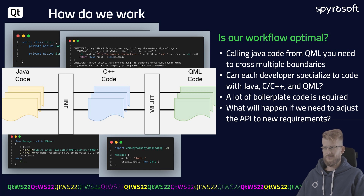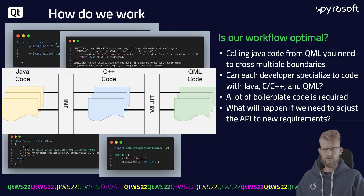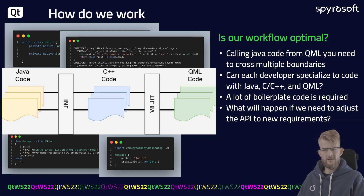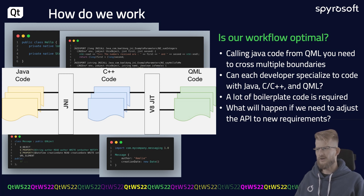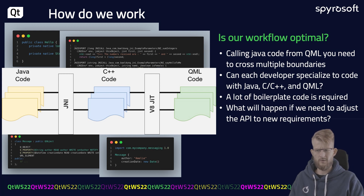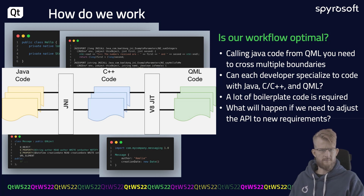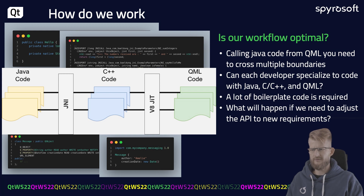Is our workflow optimal? Calling Java code from QML, you need to cross multiple boundaries. A lot of repeated code is needed for both QML to C++ and C++ to Java transitions. Can each developer specialize in Java, C, C++, and QML? Writing code in three languages requires switching between different tools. A lot of boilerplate code is required, it is error-prone, and when dealing with multiple languages, it might be hard to debug. What will happen if we need to adjust the API to new requirements? Simple API changes require a lot of updates in different parts of the code.